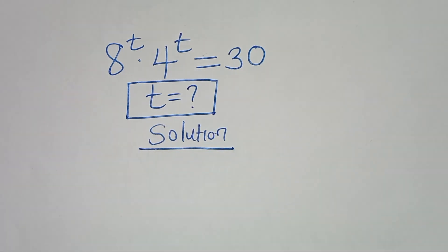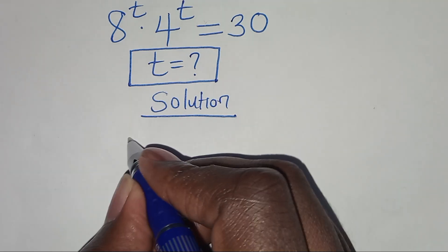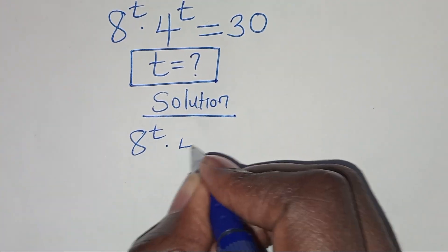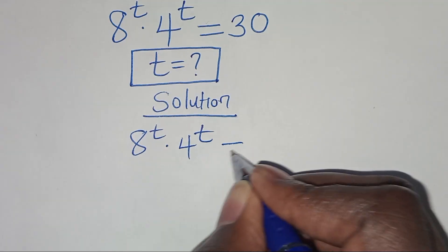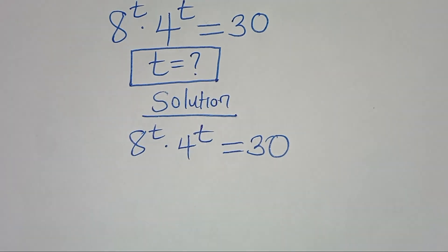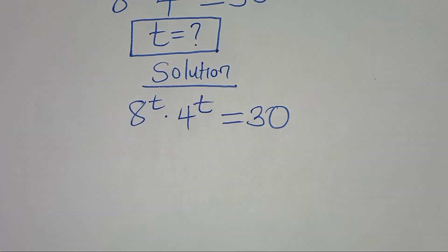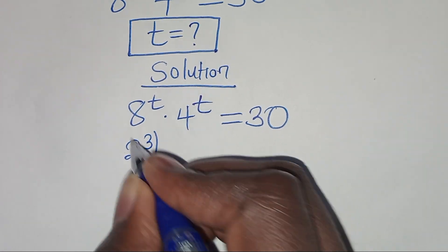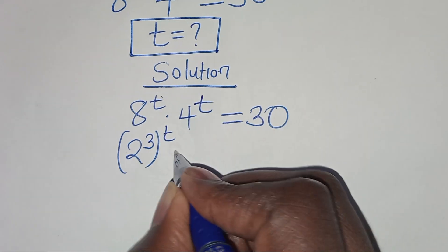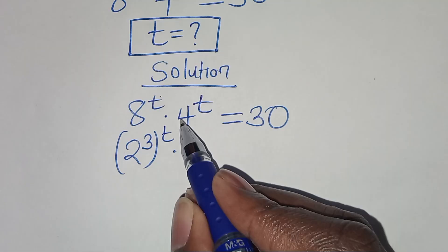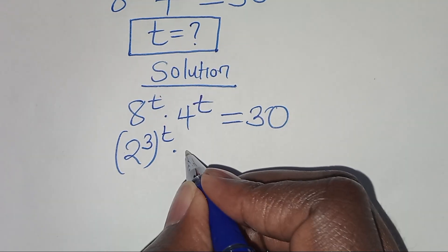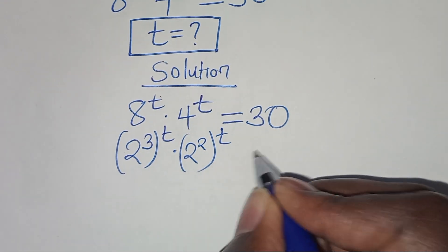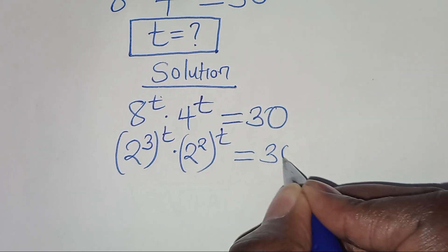This exponential equation, that is 8 to the power of t times 4 to the power of t, is equal to 30. We can express 8 as 2 to the power of 3, raised to power t, multiplying by 4, which we express as 2 to the power of 2, raised to power t. This is equal to 30.